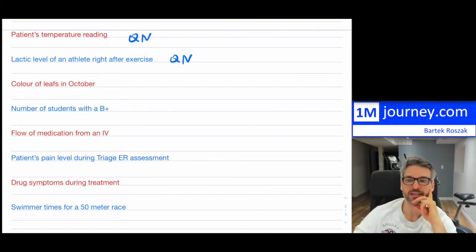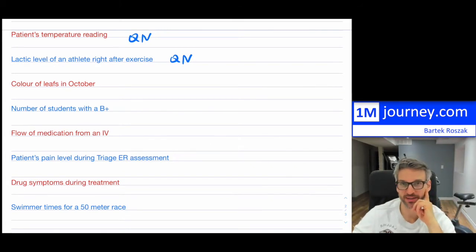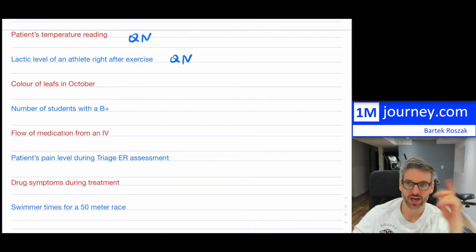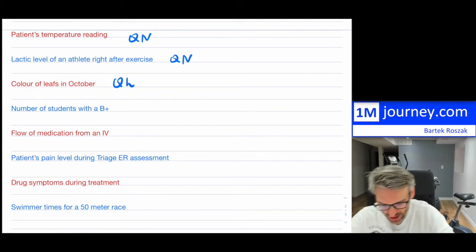Color of leaves in October — the color of leaves is not a quantitative variable; it's a qualitative one. The leaves can take on different colors. There's a range of different colors you might see, from yellow to red, and they might change, but this is qualitative. I'll write QL for qualitative.